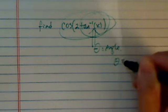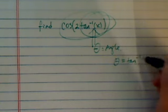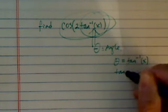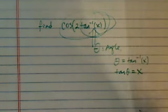So basically, if you let theta equal to tangent inverse of x, then tangent of theta becomes x. This is the core of this type of problem.